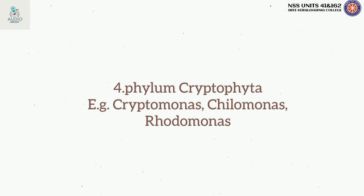Phylum Cryptophyta is a small but ecologically and evolutionarily important group. A common example is Cryptomonas, which is a free-living freshwater Cryptophyte. It often multiplies in large numbers and forms blooms in the greater depths of lakes or beneath ice in winter. The cytoplasm inside the pellicle is not clearly differentiated into ectoplasm and endoplasm.